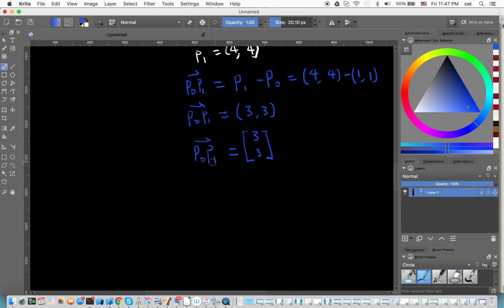So this vector has size. We can let it equal V. So the size of V is equal to magnitude √(3² + 3²) equal to √18, which is 3√2.